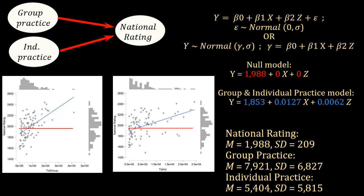That means now it's saying that for one hour of group practice, you're going to increase 0.0127 points of national rating. And for one hour of individual practice, it is expected to increase 0.0062 points of national rating. If we transform this into 10,000 hours, 10,000 hours of group practice will increase 12.7 points of national rating, and 10,000 hours of individual practice will increase 6.2 points in national rating.